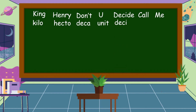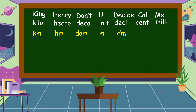In the mnemonic 'King Henry don't you decide call me': King for kilo, Henry for hecto, don't for deka, you for unit (the basic unit, meter), decide for deci, call for centi, and me for milli. So the units are: kilometer, hectometer, dekameter, meter, decimeter, centimeter, and millimeter.